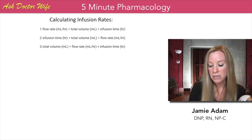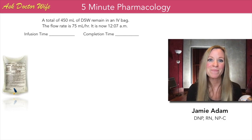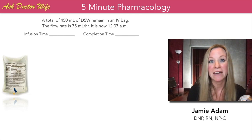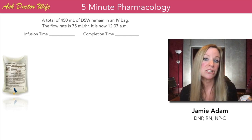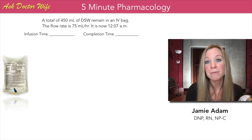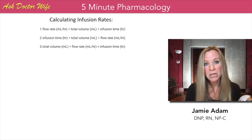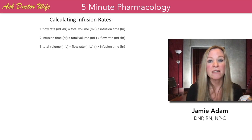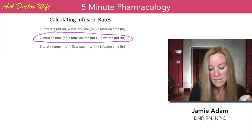Let's practice with this question. A total of 450 milliliters of D5W remain in an IV bag. The flow rate is 75 milliliters per hour. It's now 12:07 AM. This question is looking for the infusion time and also the completion time. Going back to our formula, infusion time equals total volume divided by flow rate.